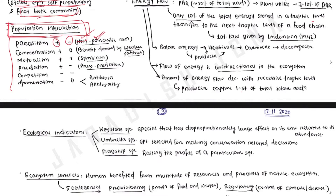In commensalism, one organism has a positive impact while there is no effect on the other organism. In mutualism, also known as symbiosis, there is a positive impact on both organisms. In predation, one organism has a positive impact and the other has a negative impact — it's like prey-predator interaction. In competition, both organisms suffer — both have negative impact. Amensalism means there is a negative impact on one organism and a neutral impact on the other; examples are antibiosis and allelopathy.